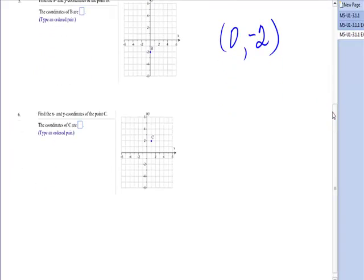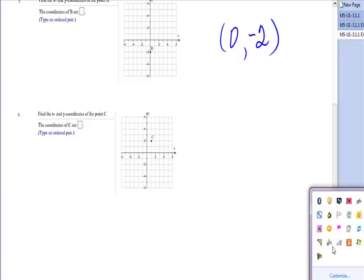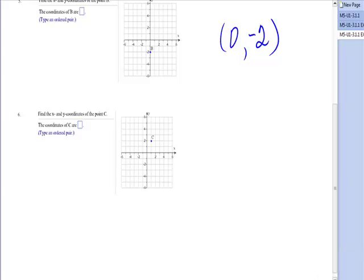And finally, all right, last point. Give the coordinates of point C. All right, from the origin, you would have to move to the right to get in line with point C. So in the x direction, 1. In the y direction, up 2. It is the point 1, 2.